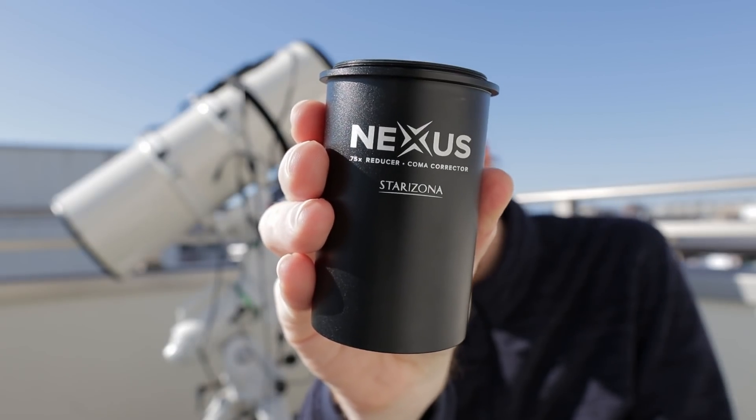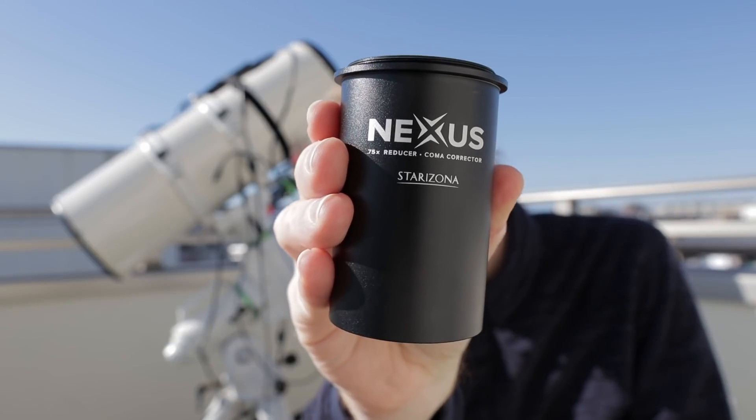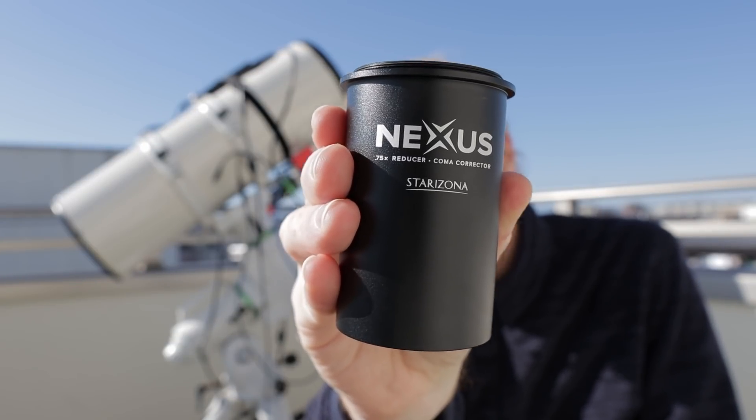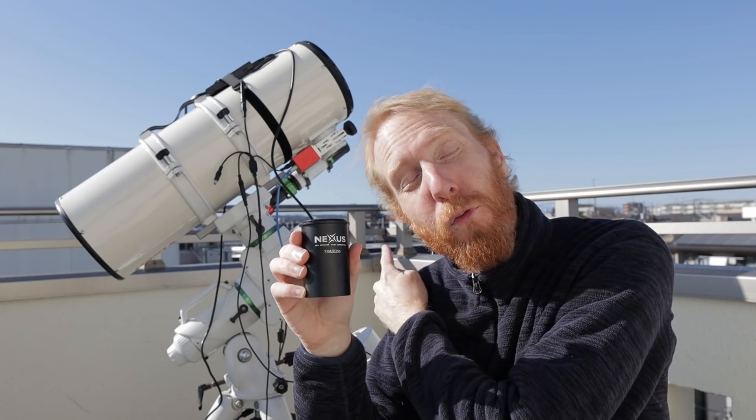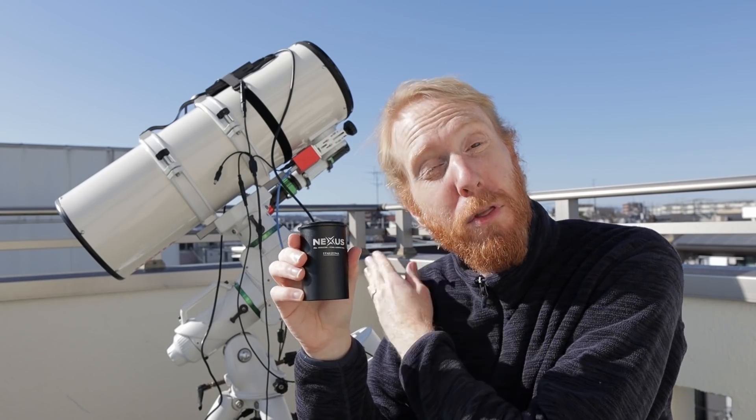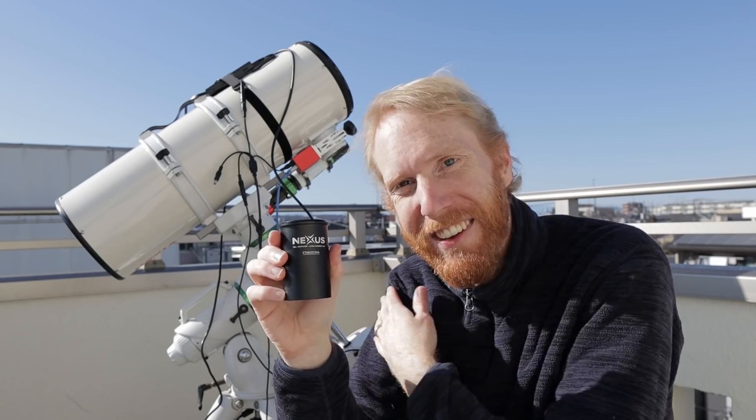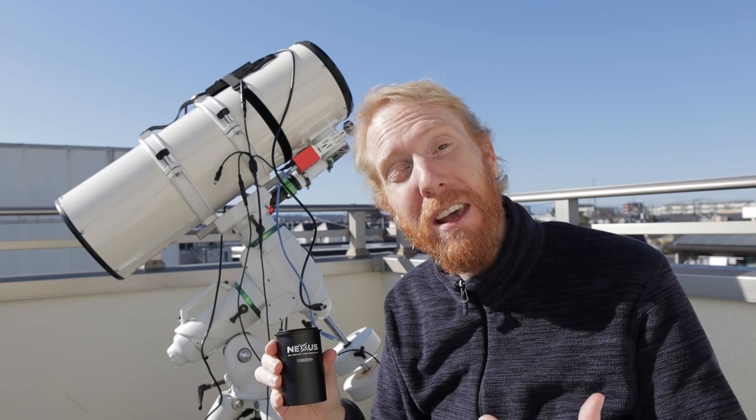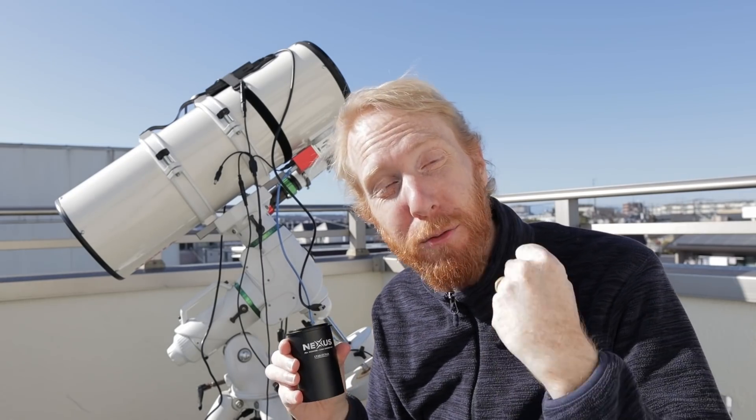Today we are going to look at the Starizona Nexus coma corrector and focal reducer for fast Newtonians. This corrector can transform your f/4 Newtonian into an f/3 super fast Newtonian, which is always nice, especially if like me you've experienced the need for speed in recent months.